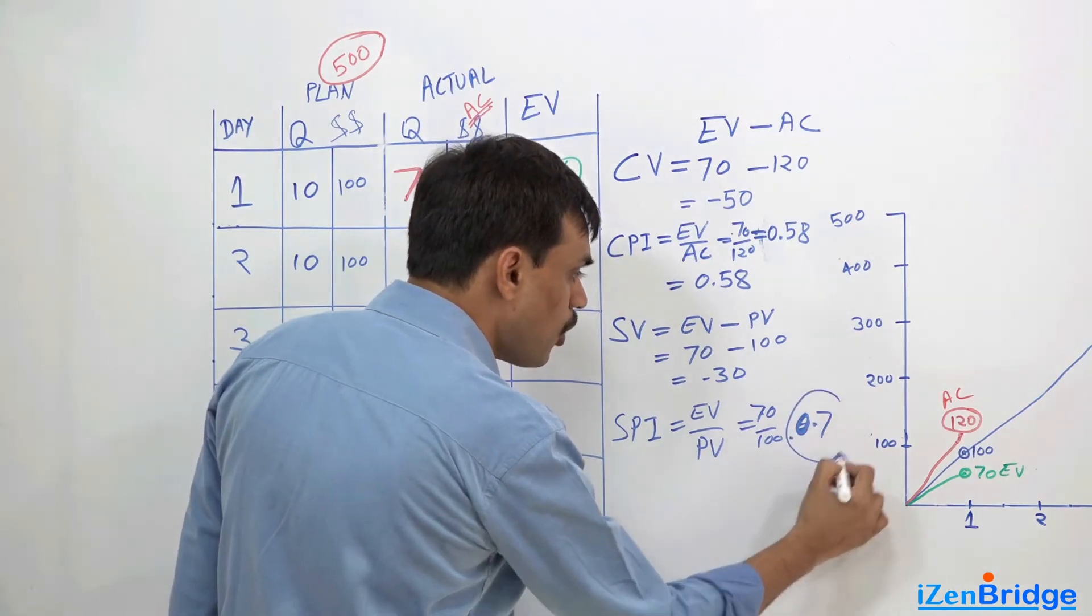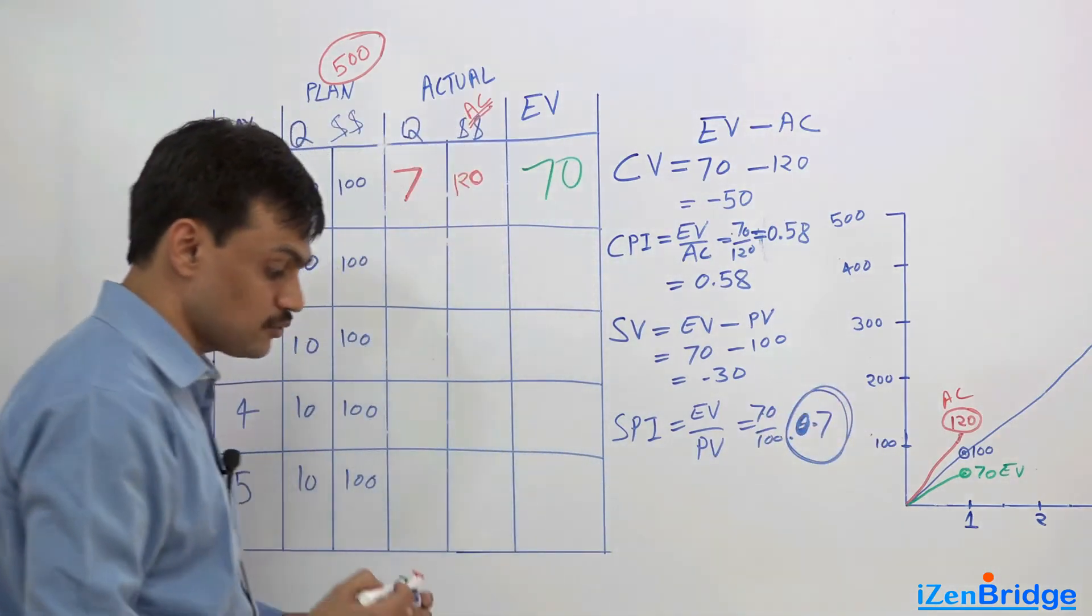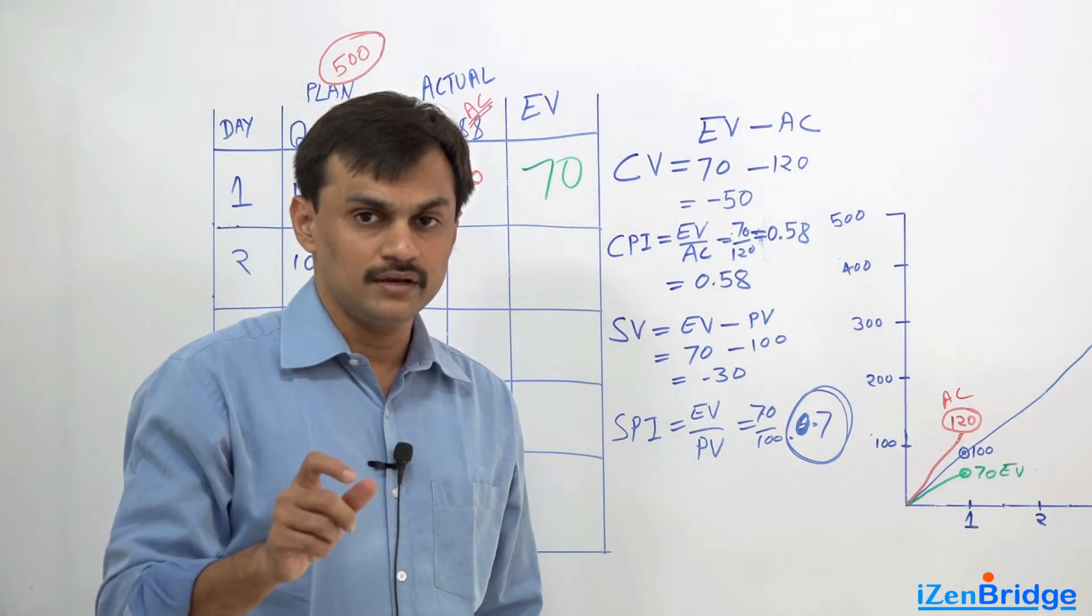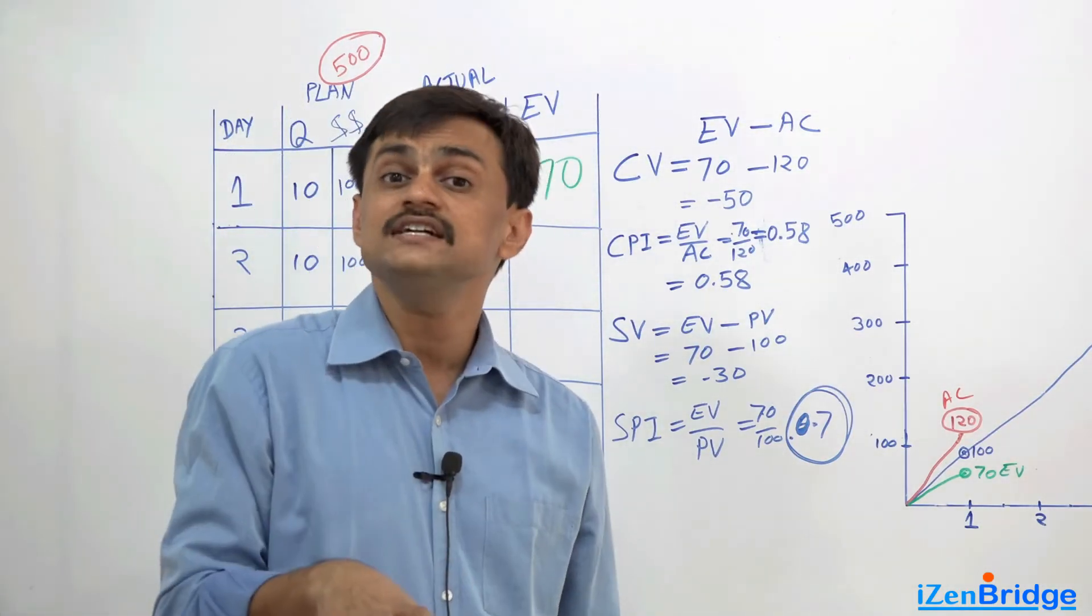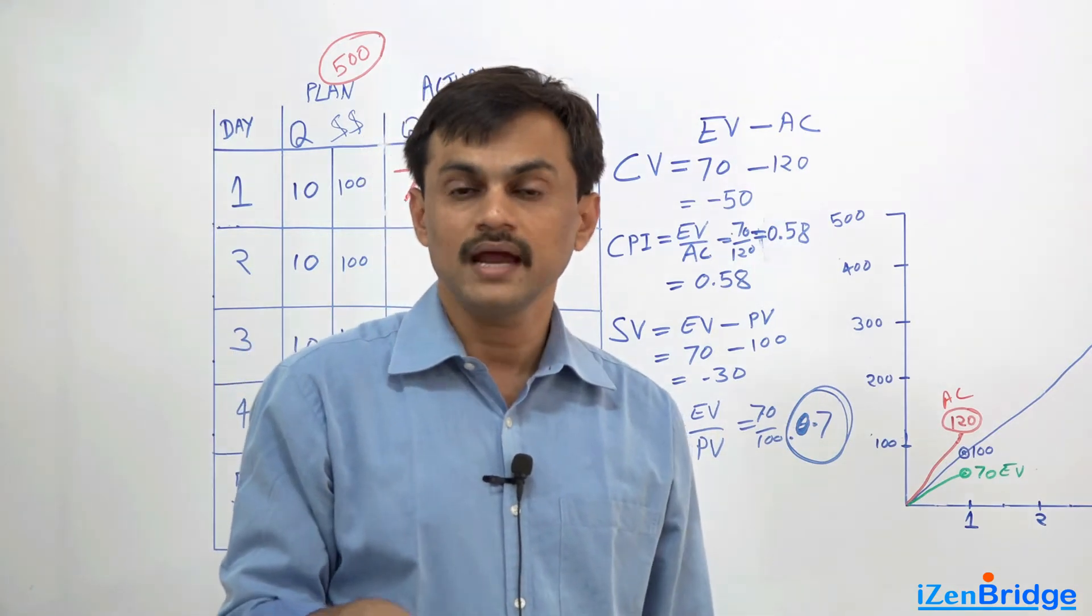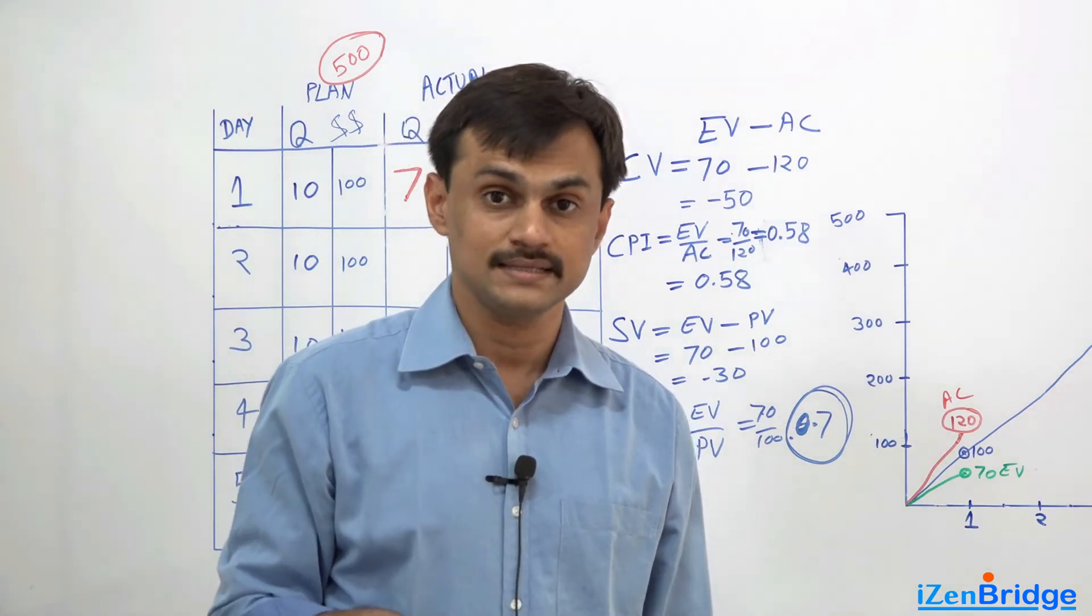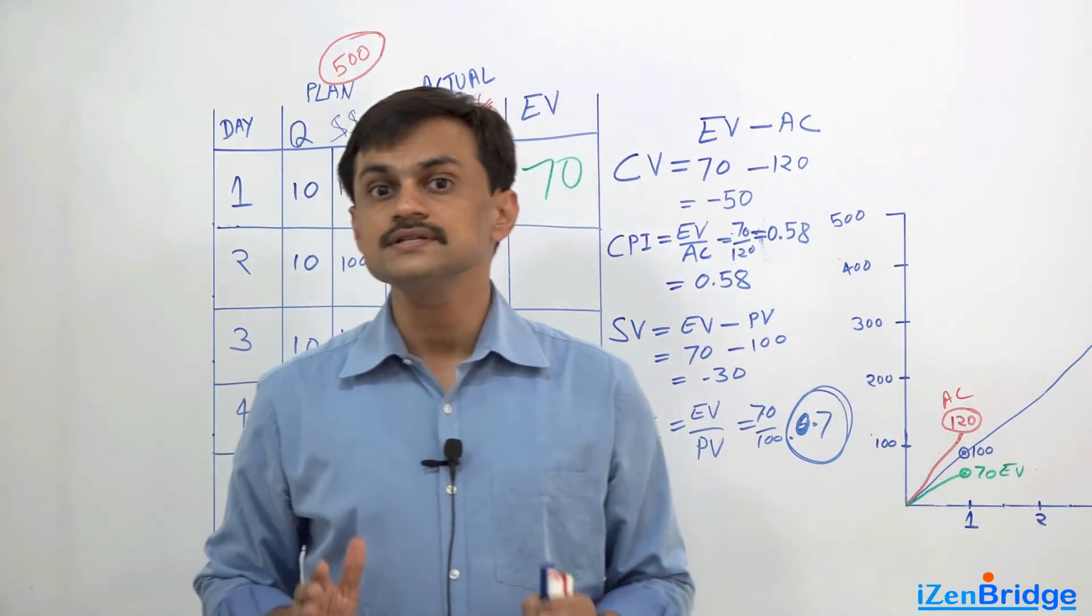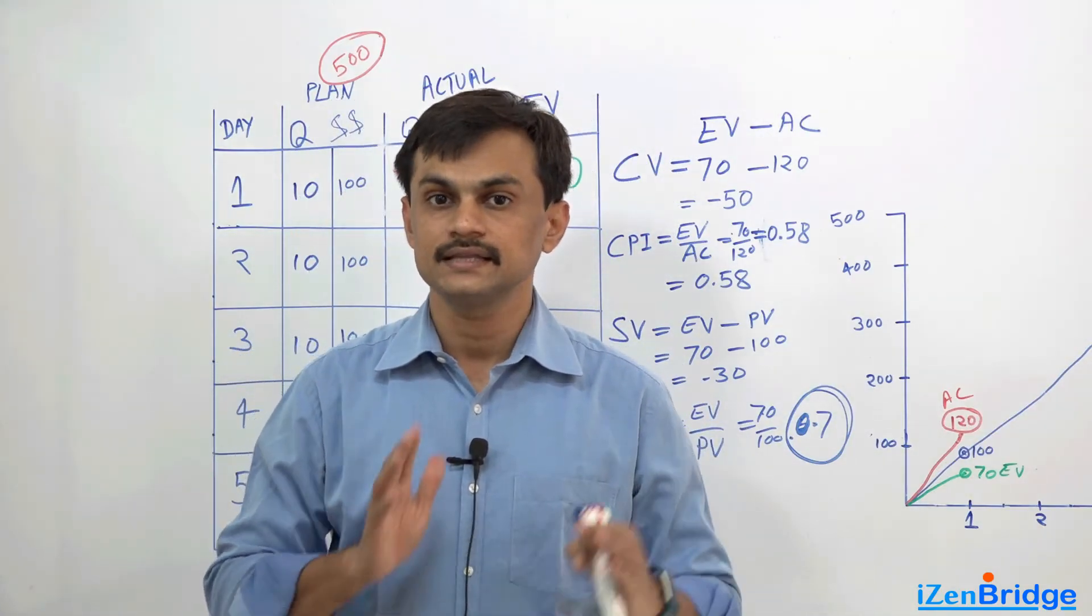So it is like how much percentage we have completed work against the plan. So 0.7 shows that we have completed 70 percent of the planned work, and that is what the schedule performance index tells. It primarily tells at this point in time how much percentage we have completed the planned work.